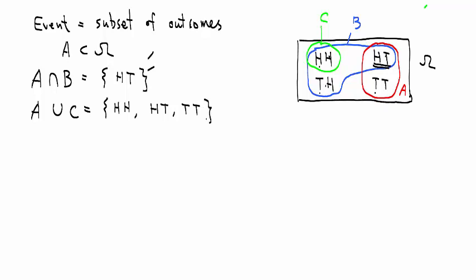Or we can define a set's complement. For example, B complement. That means event B didn't happen. There is not at least one head in the two coin flips. So in this case, it has to be TT. It's a single element.